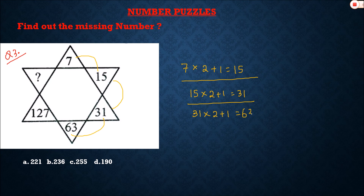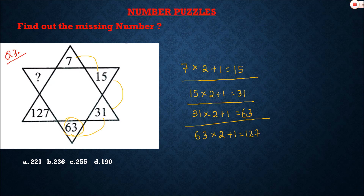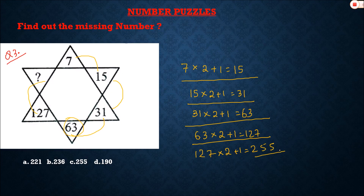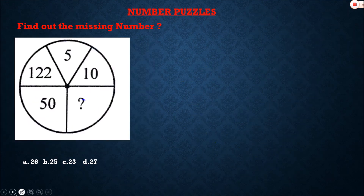Continuing the pattern: 31 multiplied by 2 plus 1 equals 63, and 63 multiplied by 2 plus 1 equals 127. So the next number is 127 multiplied by 2 plus 1, which equals 255. Option C, 255, is the correct answer. All these kinds of problems are asked in exams like AMCAT and eLitmus.